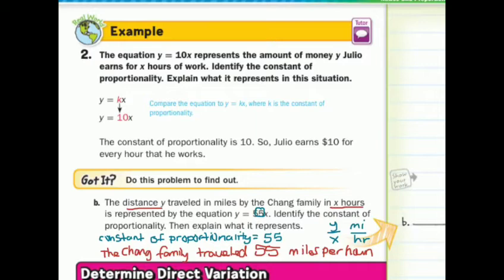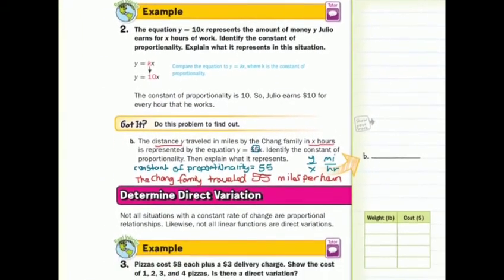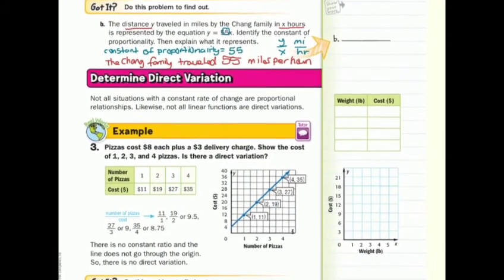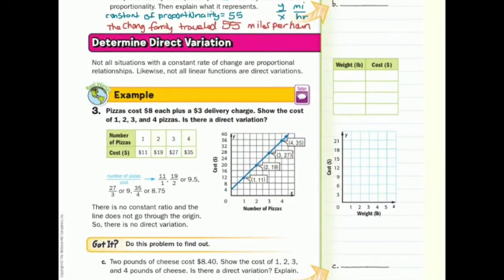Let's move on to determine direct variation. Not all situations with a constant rate of change are proportional relationships. Likewise, not all linear functions are direct variations.